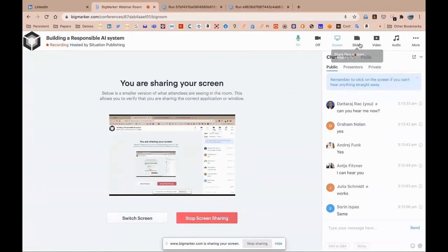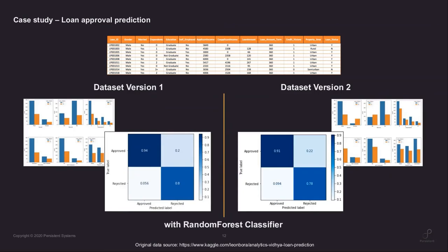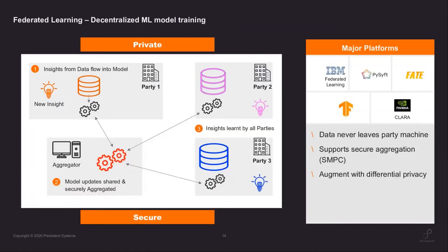Let me come back to the slides. The slides were showing the same thing about how the dataset changes. We talked about transparency, accountability, and reproducibility. The last two aspects I want to talk about are privacy and security, specifically one example: federated learning.